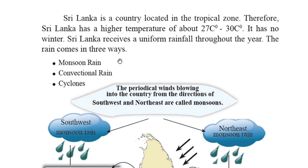Hello everyone. Previously we discussed about the geographical location of Sri Lanka. Today I am going to discuss about rain, that means the monsoon rain of Sri Lanka. We all know that Sri Lanka is a country located in the tropical zone and it is near to the equator.